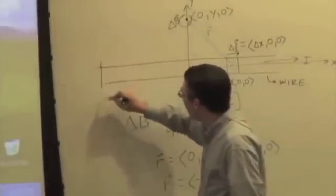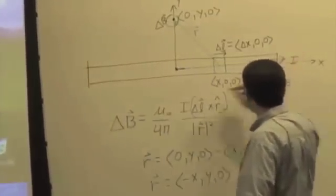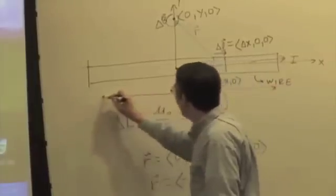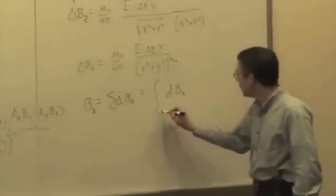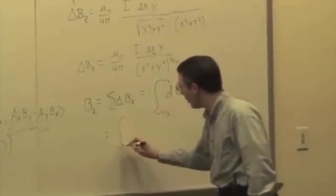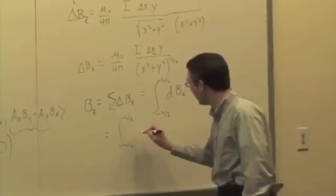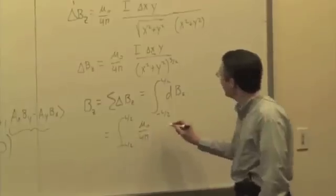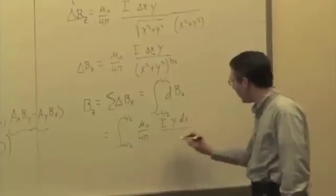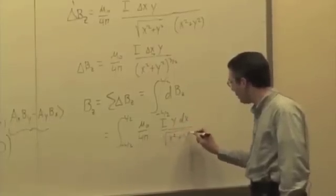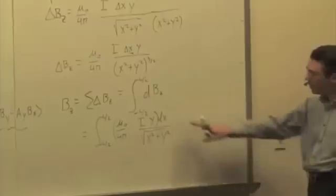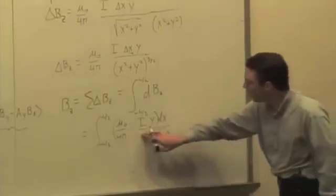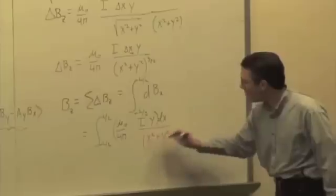And x is running from where to where? Well, x is running from, let's say, for a segment that has a length of L, x is going from negative L over 2 to positive L over 2. And that gives, we do this integral, integral from negative L over 2 to positive L over 2 of mu naught over 4 pi, I, y, dx over x squared plus y squared. Mu naught over 4 pi, I, and y are all constants, so it just becomes an integral of dx over x squared plus y squared to the three halves.